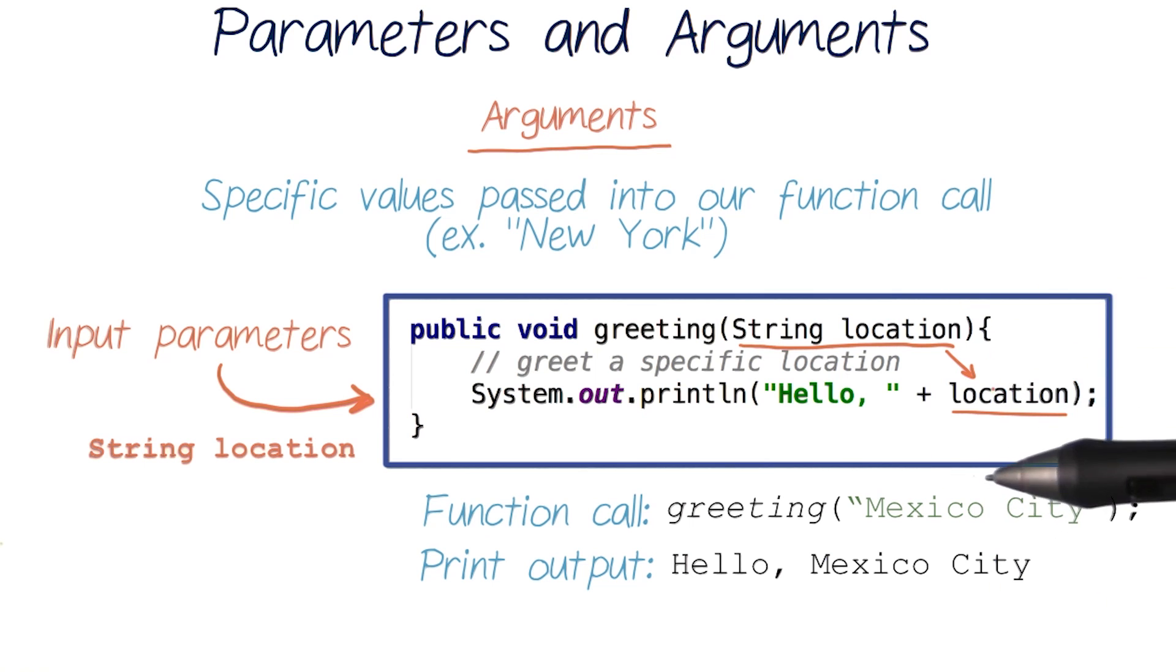Now we can call our greeting function and pass in different string locations to it every time. This is just like we've been doing with println by passing it different strings each time. In our next quiz, we'll see more examples of how parameters can be useful.